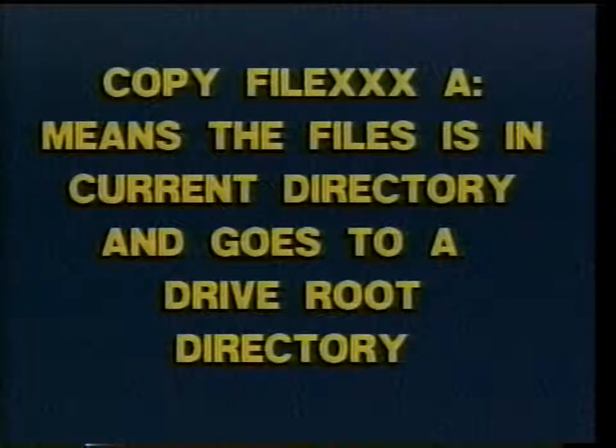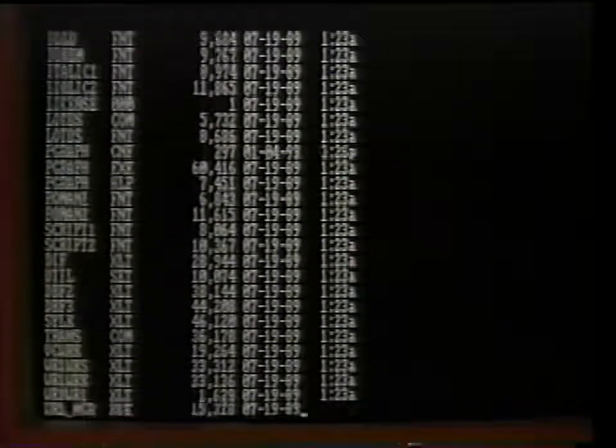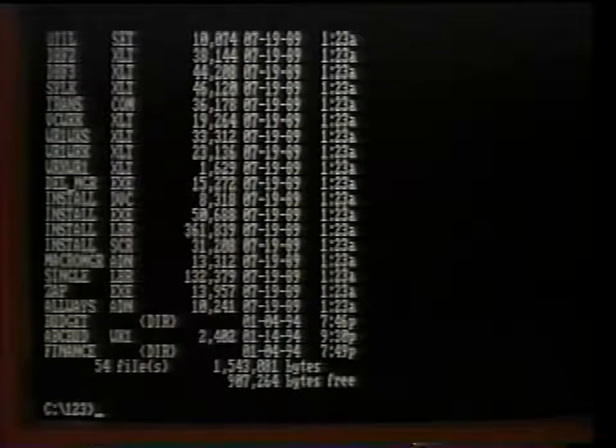If paths are not used, DOS will assume you mean the directory you're in on each drive. Many times you will want to create more than one data subdirectory per program to help better organize your data system. In this case, we will issue the command MD C colon backslash 1-2-3 backslash finance and press enter. This creates a second data subdirectory next to the subdirectory budget. Now we have the ability to keep our budget data separate from the other financial data. You can have any number of subdirectories and levels. Just keep using backslash in a logical sequence.